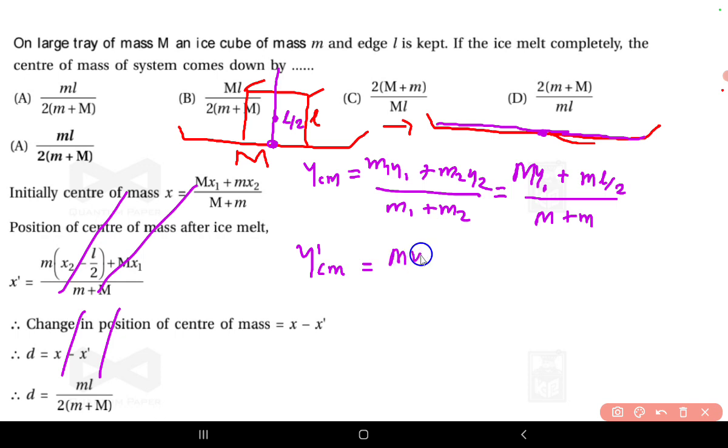So for water it will be zero here. So now we can again write this equation as M*y1, because for the tray there is no change in the center of mass. But for water it is m into zero, divided by M plus small m. So we have to find the change in the center of mass.